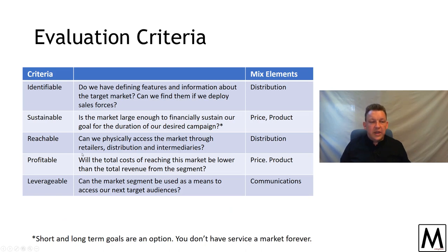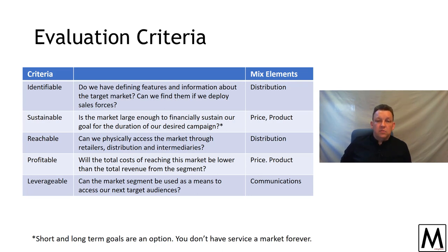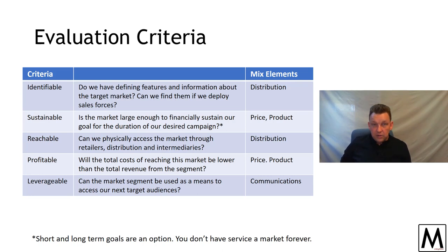Selection criteria for your audience. Is it identifiable? Do you know where to find your audience? Can we identify, target, and position to them? Can we get the value offer to them via distribution? Sustainable — is the market large enough to keep you afloat for the duration of the campaign? Is the value offer enough for them to buy it once, twice, or repeatedly? Do you need them to buy it once or many times? Reachable — can you physically access the market? Can the value offer be made available to the audience?